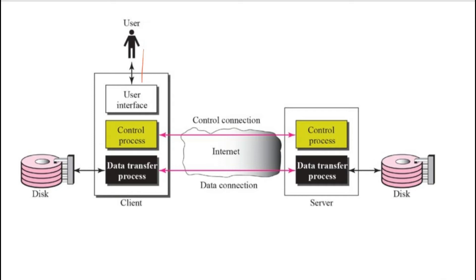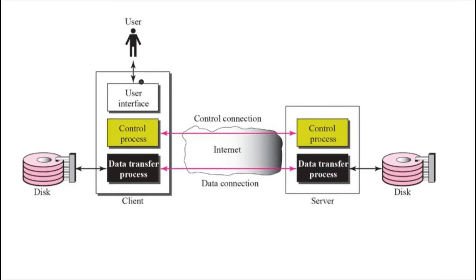Suppose you are sitting on your system and using a web browser interface to access an FTP server. You can either use a web browser or FTP client software. The first process that runs in your system is the client control process. The client control process makes a control connection with the control process on the FTP server.